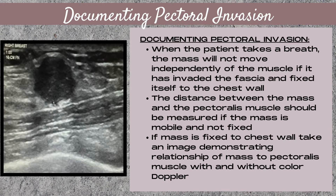If that mass does not move independently of the chest wall when the patient takes a big breath in, then we want to take a close image and make sure that our depth is deep enough that we can clearly see the relationship of the mass to the chest wall. We also want to ensure that we take a color Doppler image showing the relationship of the mass to the chest wall. Then we take our general images as well — our radial and anti-radial pictures with and without color Doppler, and also take our three measurements.